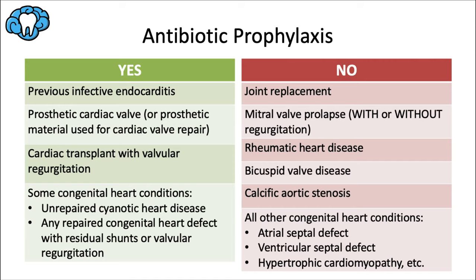Bacteria found in the mouth, like Streptococcus sanguinis, can actually enter the bloodstream during certain procedures and can technically get to the heart, but the risk of that is very, very low. Current guidelines support pre-medication for a relatively small subset of at-risk patients. This is based on scientific evidence showing that the risk of adverse reaction to antibiotics and the development of drug-resistant bacterial strains generally outweighs the benefit of protecting against infective endocarditis, except for at-risk patients with underlying heart conditions.